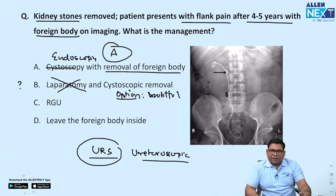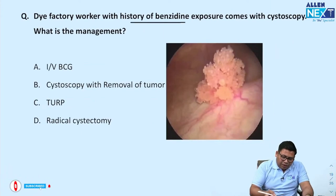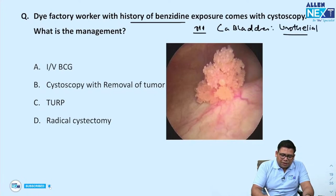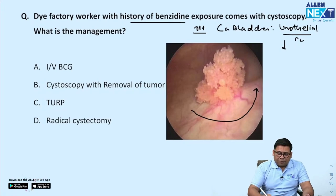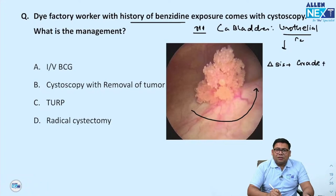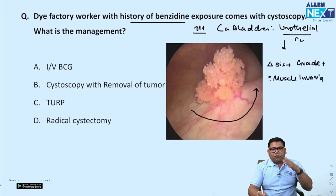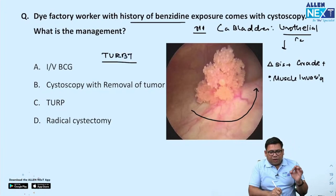Next: a bladder with benzidine exposure — there is an increased risk of carcinoma bladder, which is urothelial cancer. The next step is TURBT — trans-urethral resection of bladder tumour. You resect deep because you want to know the diagnosis, grade, and status of muscle invasion, going right up to the junction of urothelium with muscle.